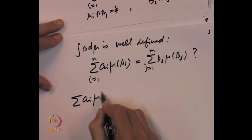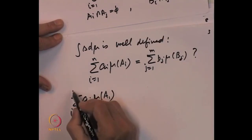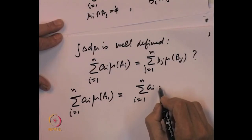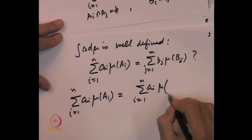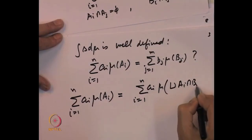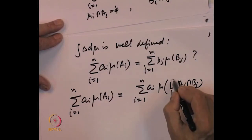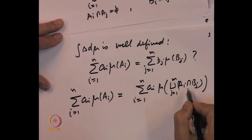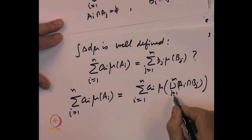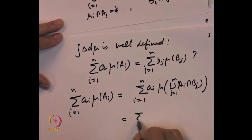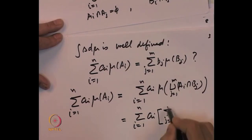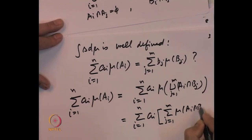We write sigma_{i=1}^{n} a_i mu(A_i). Since the union of B_j equals x, we have A_i = union_{j=1}^{m} (A_i ∩ B_j). Since B_j's are disjoint, the sets A_i ∩ B_j for fixed i are disjoint. By the finite additivity property of the measure, mu(A_i) = sigma_{j=1}^{m} mu(A_i ∩ B_j). So sigma a_i mu(A_i) = sigma_{i=1}^{n} a_i sigma_{j=1}^{m} mu(A_i ∩ B_j).